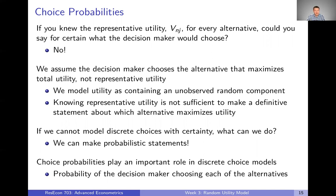Let's recap what we learned in the last video about the random utility model. We assume that the decision maker chooses the alternative that maximizes total utility — that capital U — not representative utility. Representative utility is just one component of total utility. We model total utility as also containing this unobserved random component, what we called epsilon. Knowing representative utility is not sufficient to make a definitive statement about which alternative maximizes utility, because there's that unobserved component that the decision maker knows but we the econometricians don't. Even if we could figure out which representative utility is highest, it could be that it has a really low random draw and something else has a high random draw, so what actually maximizes total utility is not the alternative that maximizes representative utility.